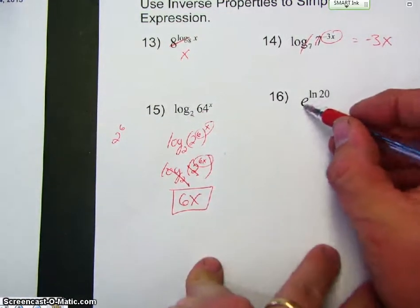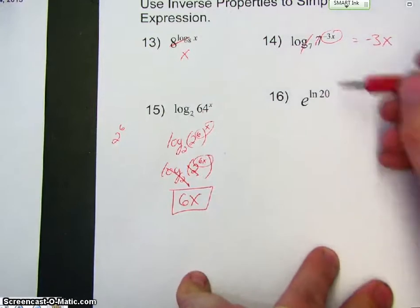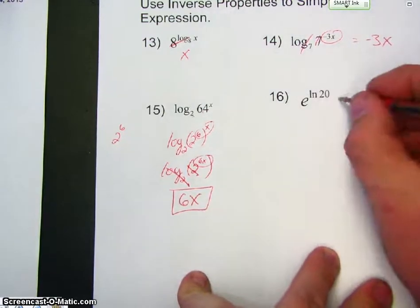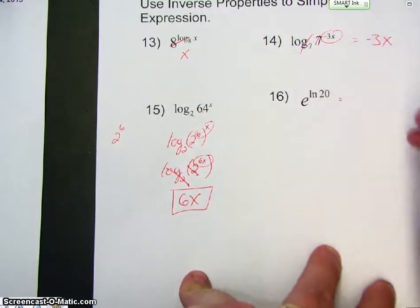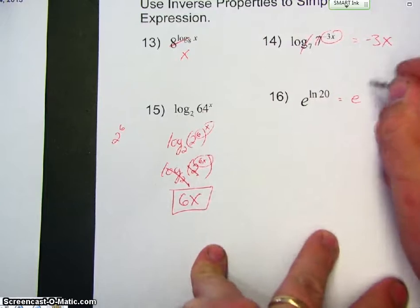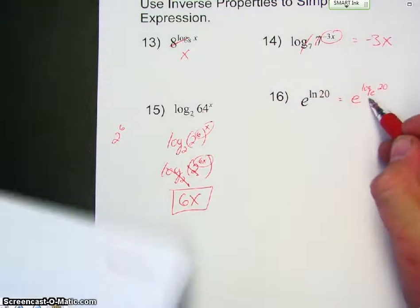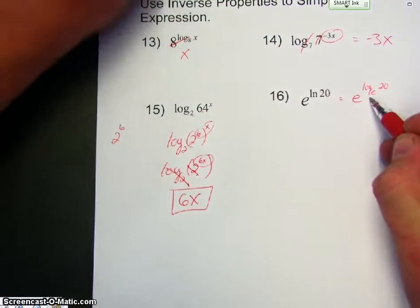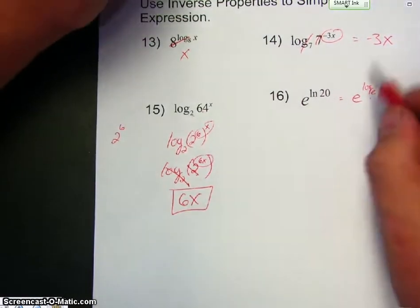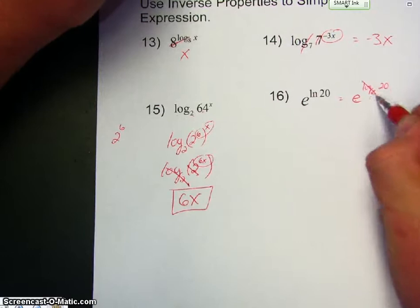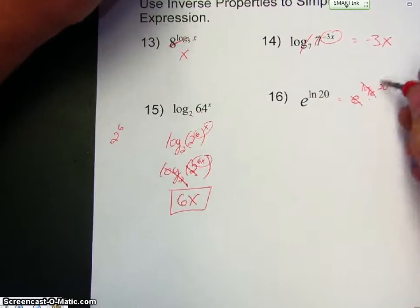Now, this is e to the natural log of 20. Well, natural log, if we remember correctly, that's a special logarithm. So, in other words, I can rewrite it as e to the log of base e of 20. That's what that is stating, and I showed you that in the previous video on special logarithms. This e and this base, they're the same, or they cancel out, excuse me, they're inverses, so I'm left with 20.